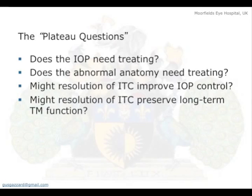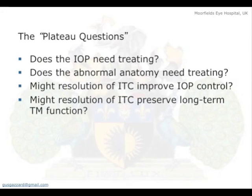Age and refraction also factor in. Does the IOP itself need treating, or can you just watch them? I think it takes more strength of will and force of medical character to do nothing — it's much easier to do something. Does the abnormal anatomy need treating? It may not. If 30 to 50% of primary angle closure suspects from some papers in China have got residual iridotrabecular contact, the event rate of those individuals converting to raised pressure and glaucoma is probably not going to be high enough to justify treating every one of them. Might the resolution of iridotrabecular contact actually improve IOP control, and might it preserve long-term trabecular meshwork function — which is ultimately what we're aiming to do in angle closure as a predominantly anterior segment disease?